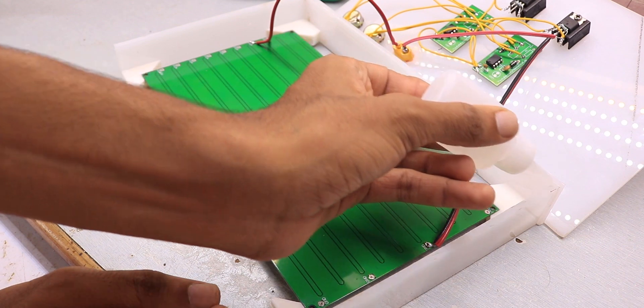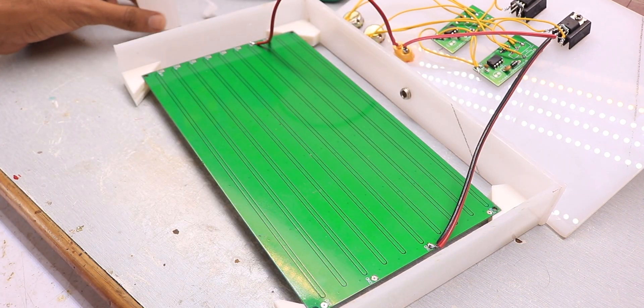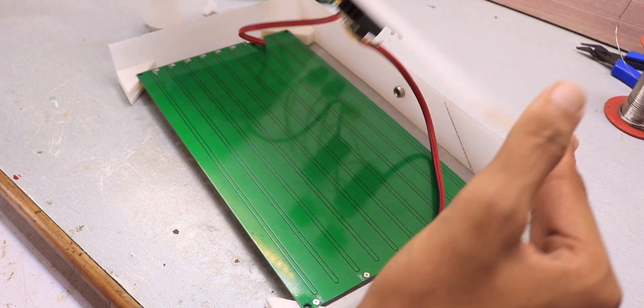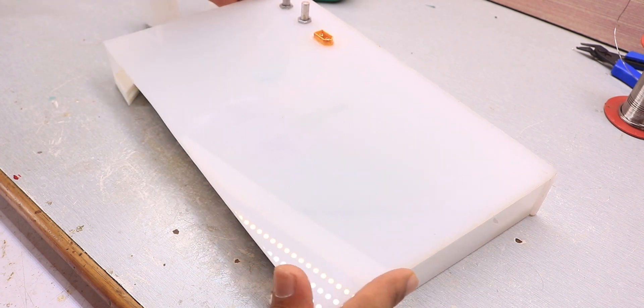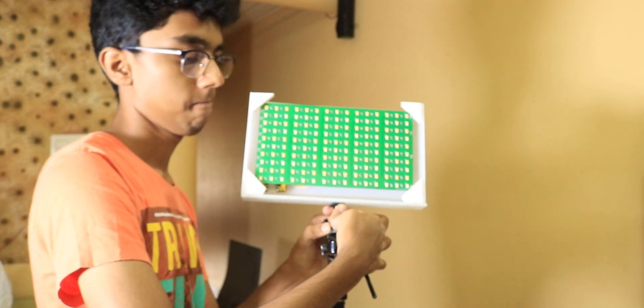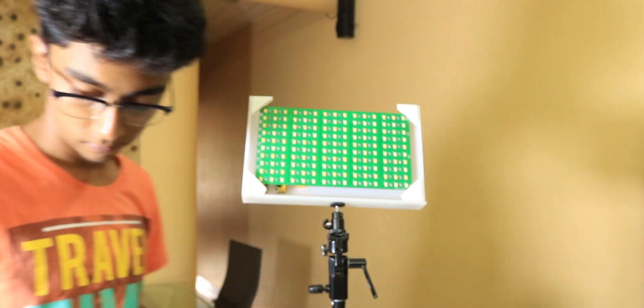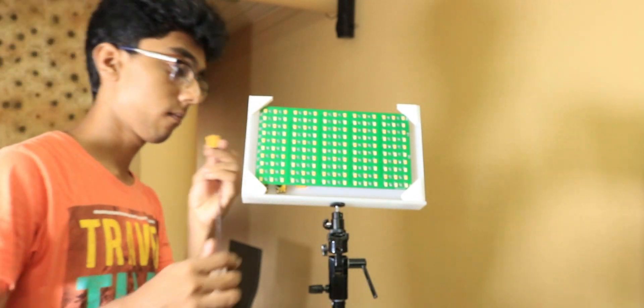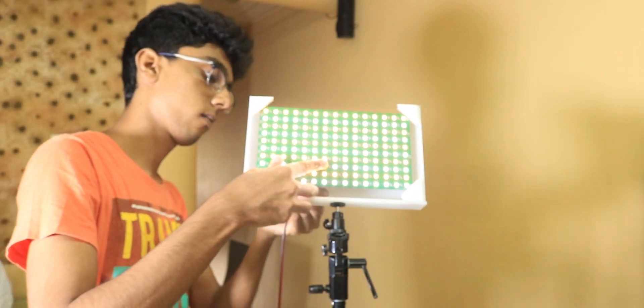Once that madness of soldering was over, I used some super glue and attached the back panel to the main frame and this project was complete. Just add a hot shoe mount to the bottom and mount it on a tripod, plug in your 12V power supply and there you go.